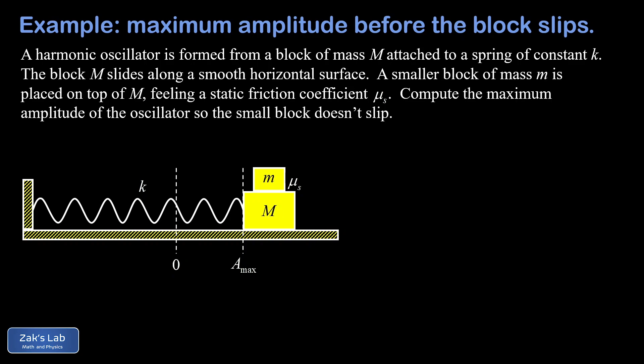The complication here is that we stacked another mass on top of big M, and that's going to experience a static friction force in the interaction with the big M that it's sitting on top of. What we're trying to find is the maximum amplitude of oscillation before that little mass breaks loose.